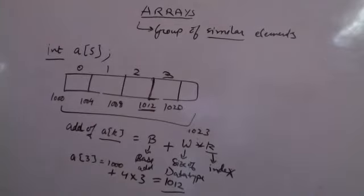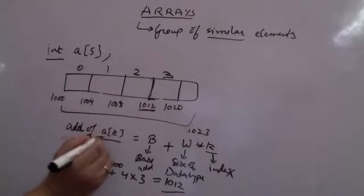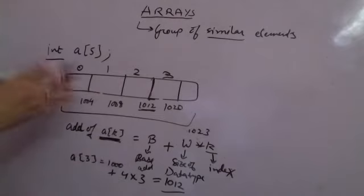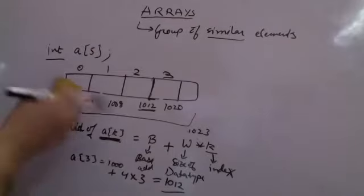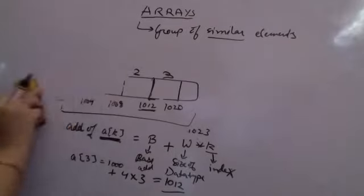Generally in C and C++, arrays are stored in continuous memory locations. Even if it is not a strict compulsion, we always use them as if they are stored in continuous locations. So to us, they are visible only as if stored in continuous memory. Now, how do I pass arrays to a function?